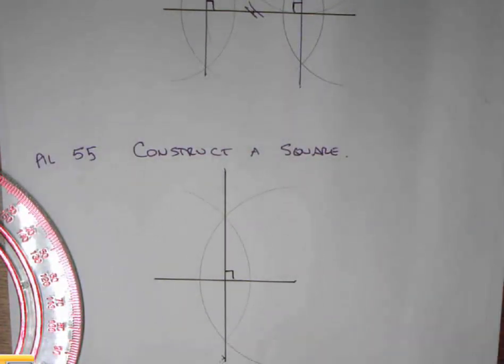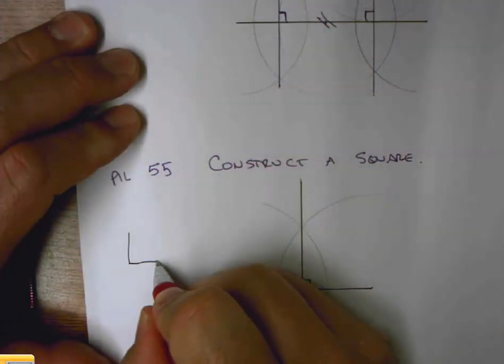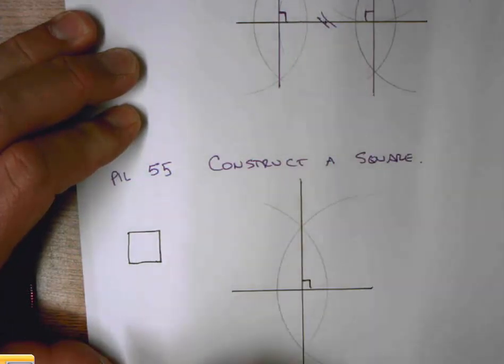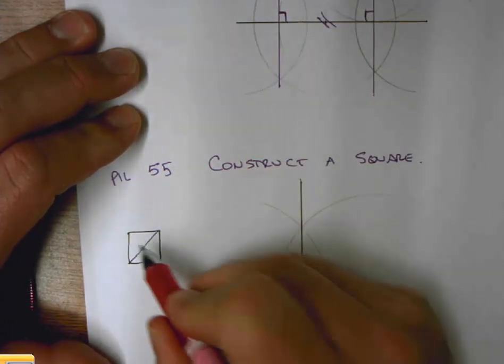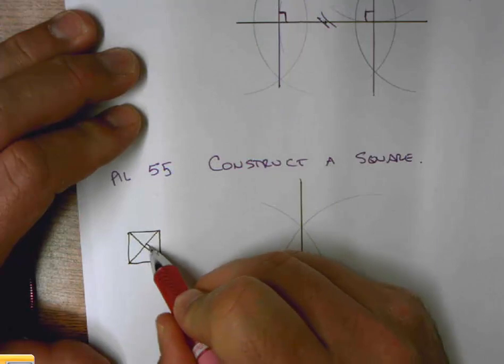And it turns out that in a square, a little sketch over here, if I had a square, the diagonals will be perpendicular.